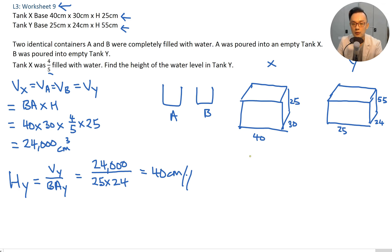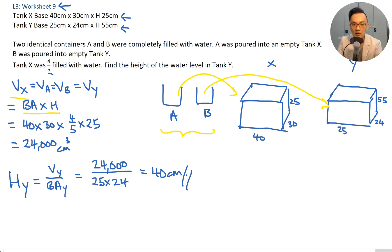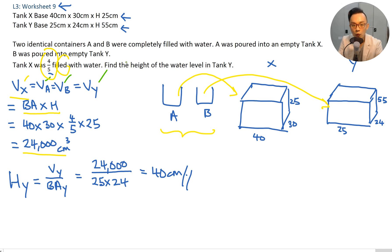In this question, A goes to X and B goes to Y, but they are the same volume. Once you find base area times height for volume of X using the four-fifths fraction, you get 24,000. That's the volume of X, A, B, and Y. Then take that volume divided by the base area of Y to get the height.